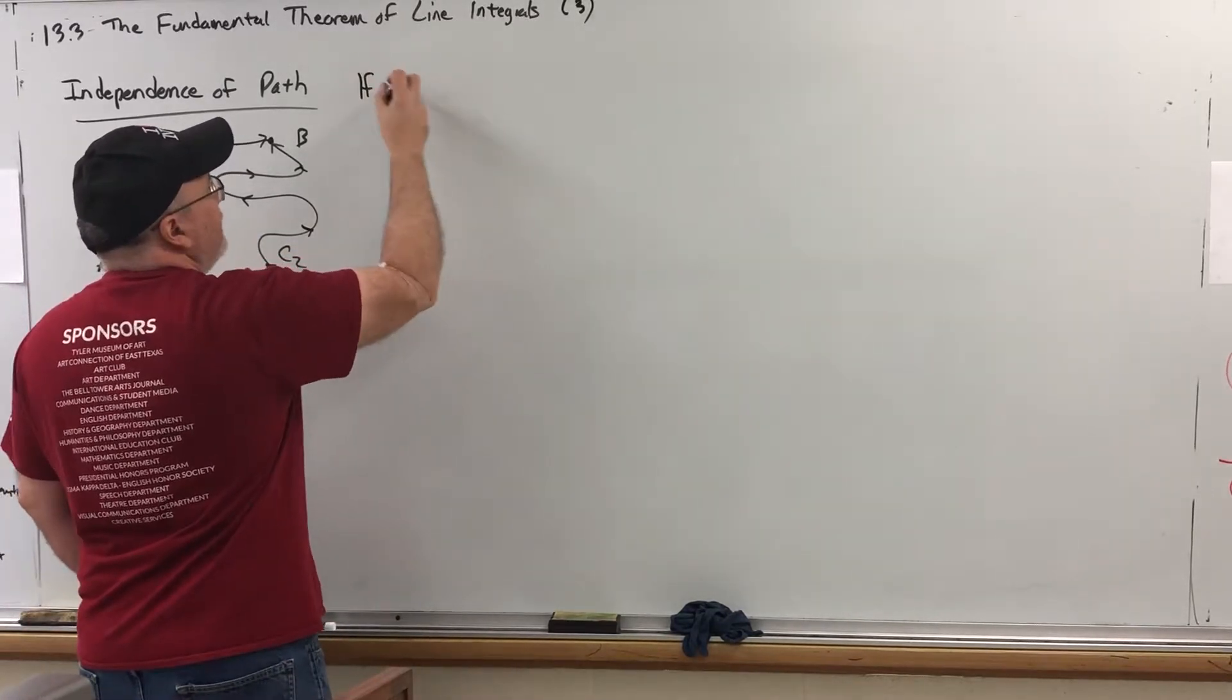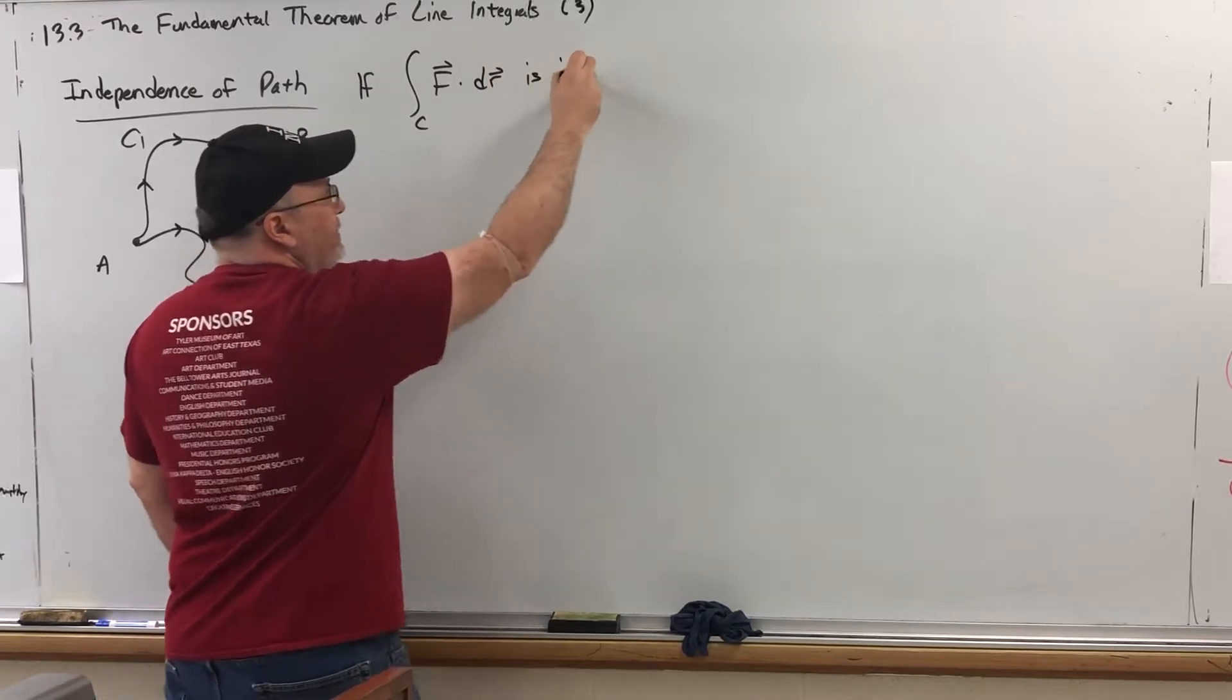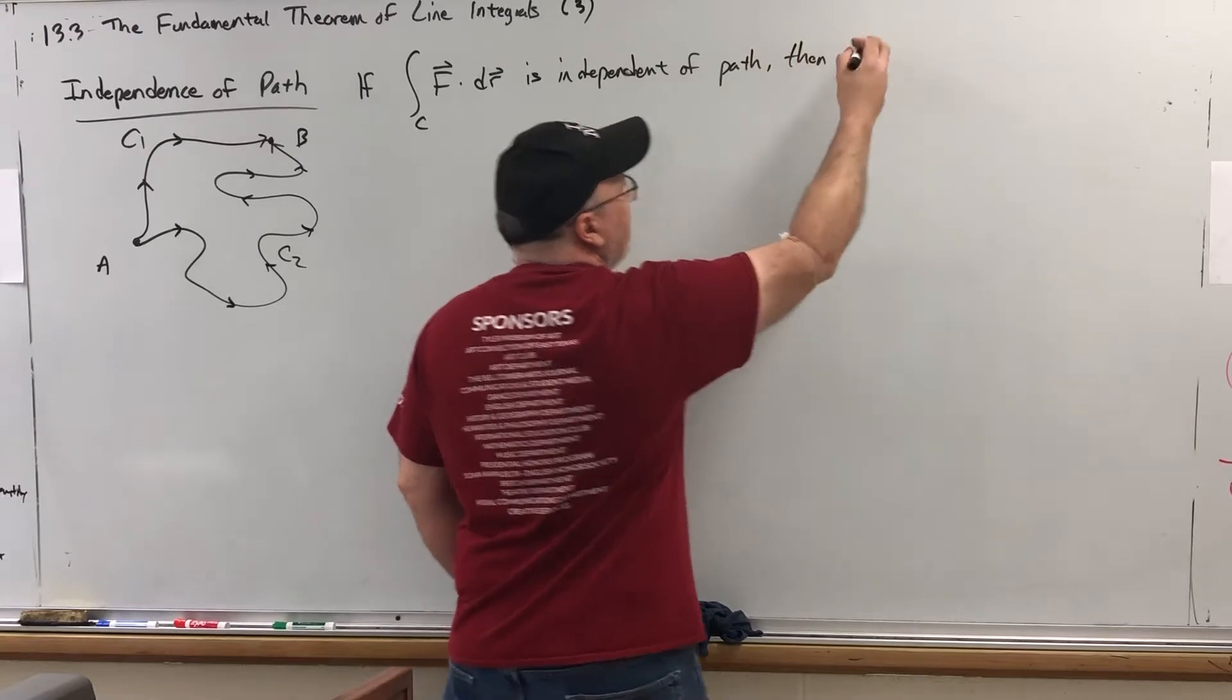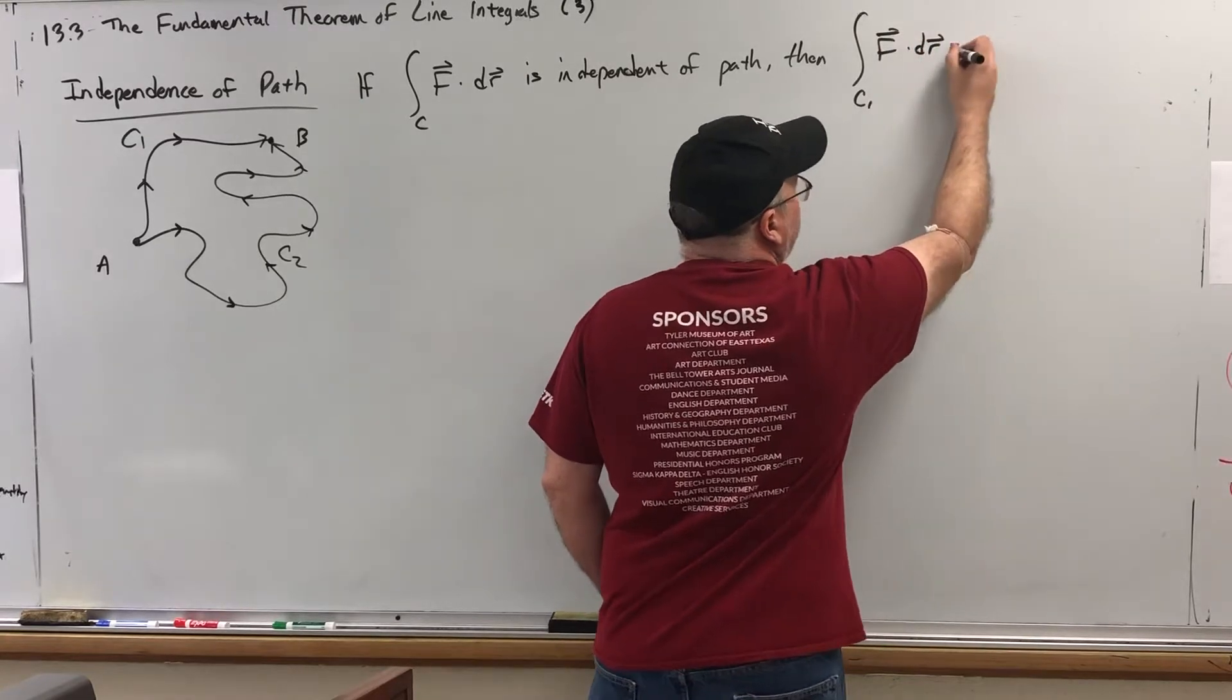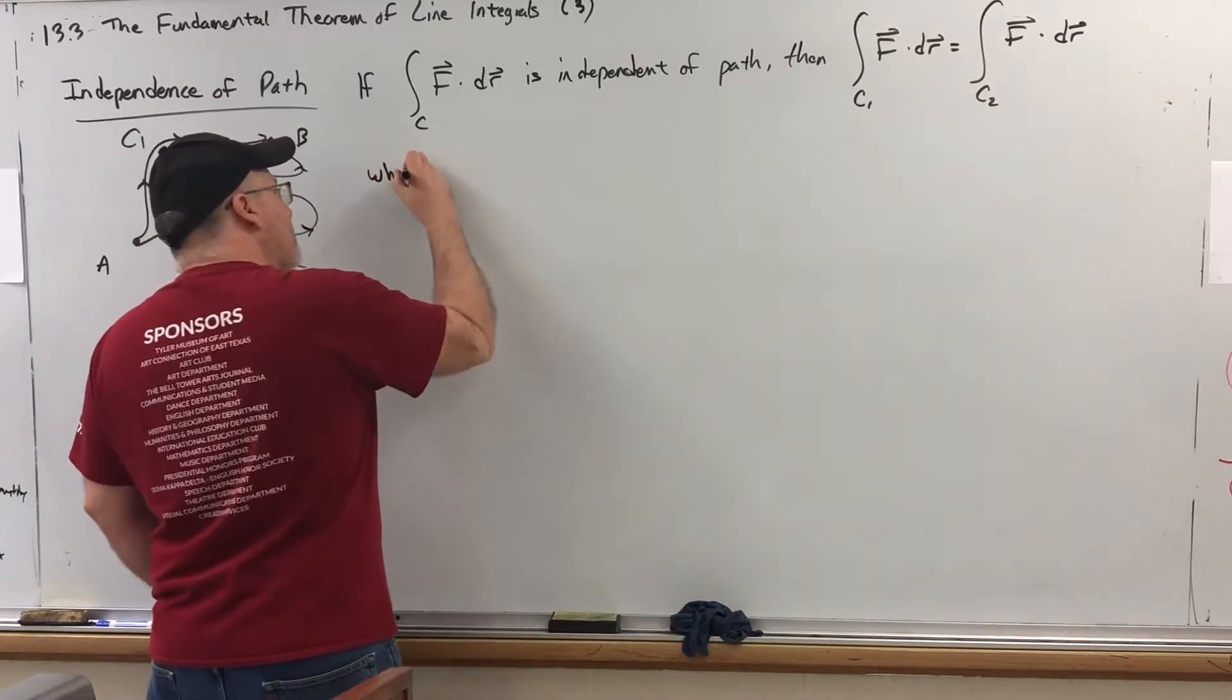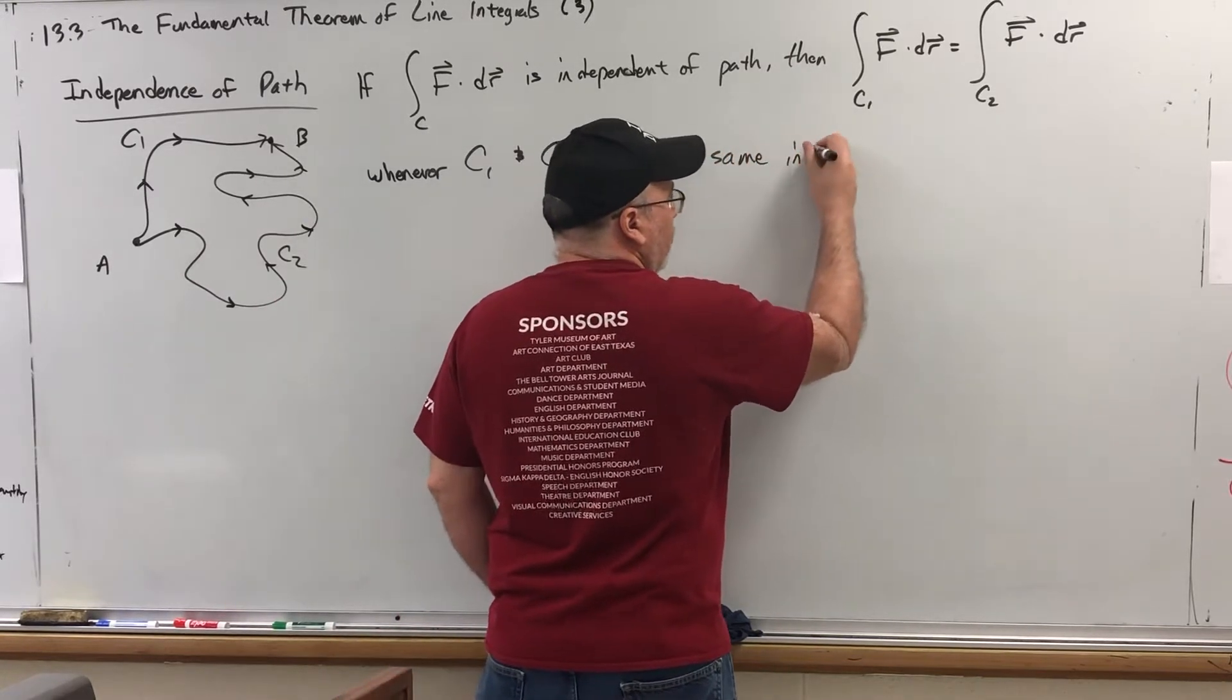If the integral over a curve of some vector function F dr is independent of path, then the integral over the curve C1 of F dot dr is equal to the integral over the curve C2 of F dot dr, whenever C1 and C2 have the same initial and terminal points.